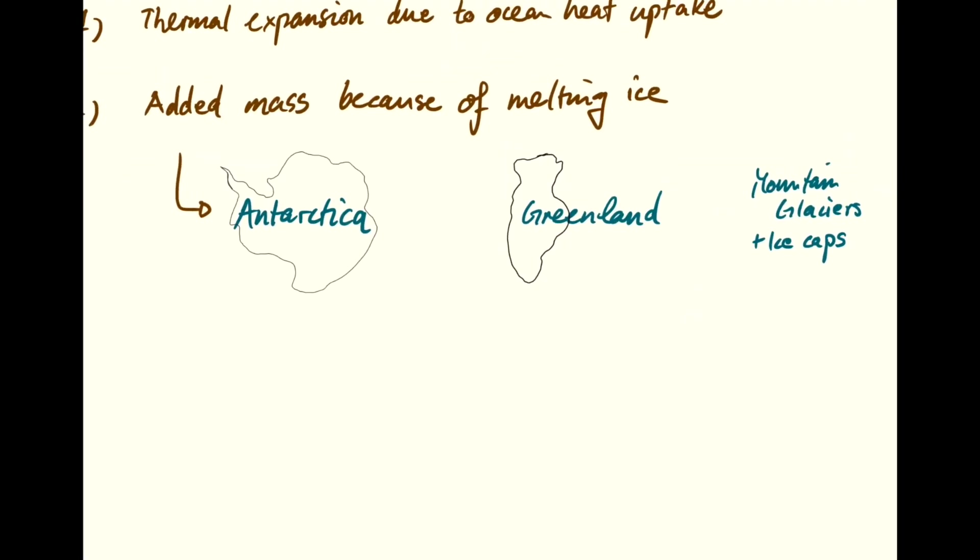So the potential contributions of these ice bodies melting are typically measured in sea level equivalents. And basically the question is, if you melt all the ice in Antarctica and take the resulting water and put it in the global oceans, how much would the global oceans rise? And so for Antarctica, we have about 58 meters sea level equivalent.